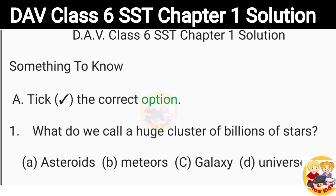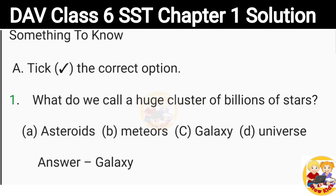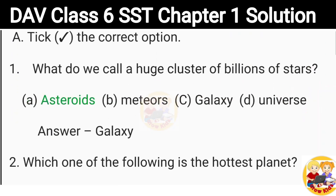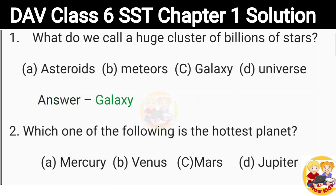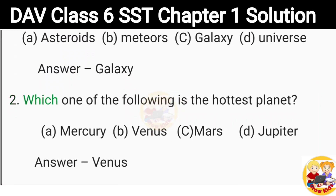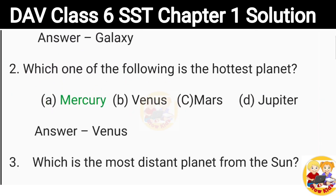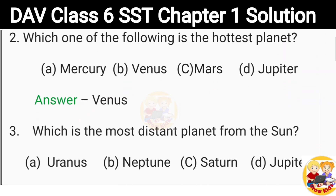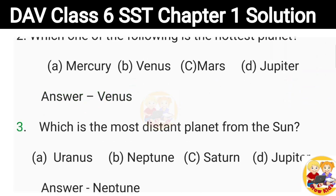Tick the correct option. 1. What do we call a huge cluster of billions of stars? Options: Asteroids, Meteors, Galaxy, Universe. Answer: Galaxy. 2. Which one of the following is the hottest place? Options: Mercury, Venus, Mars, Jupiter. Answer: Venus.